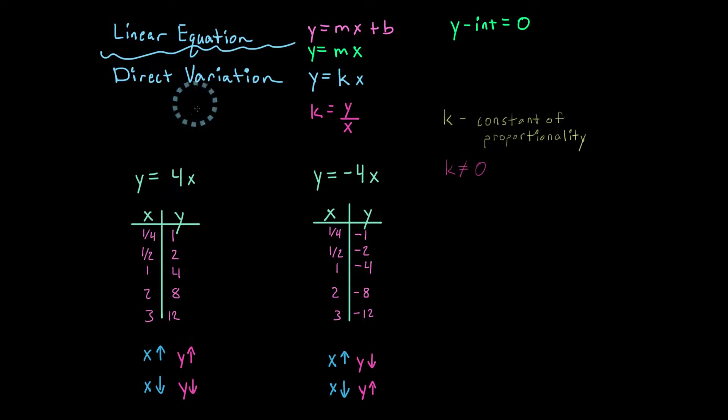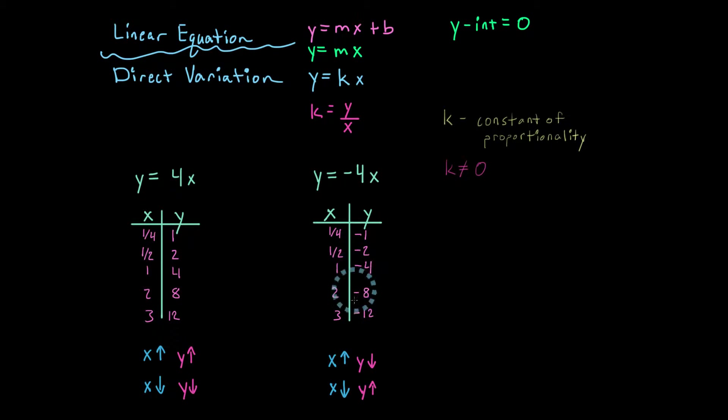So first, I want to show you another way of proving you have direct variation by either scaling up or down in your table for your equations. Let's just start easy.